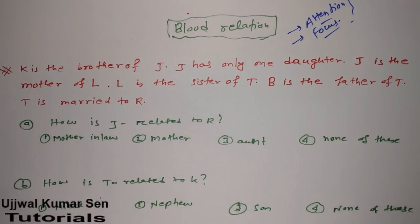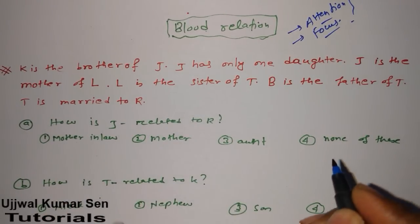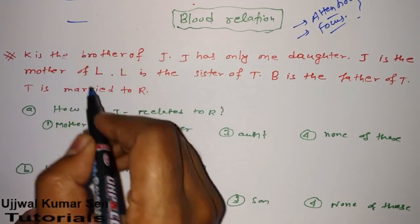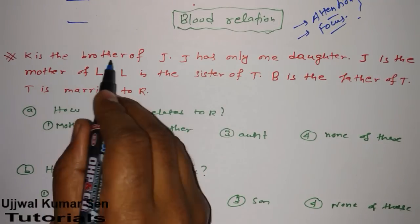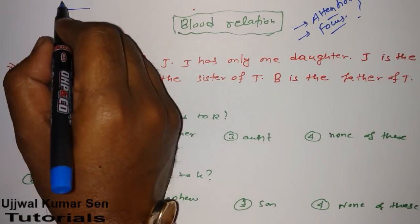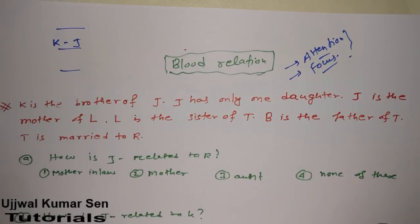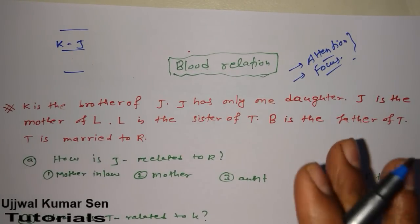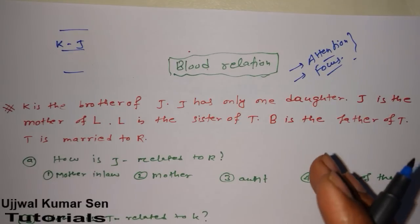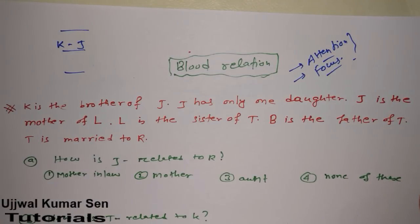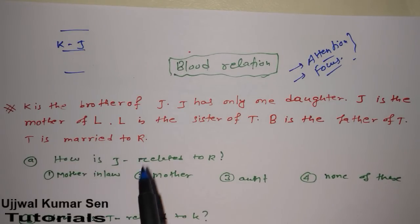Now in this question, K is brother of G. What I am going to do is make a layer. Suppose they are saying K is the brother of G, so K and J are of the same generation — both are in the same generation, same relation. J has only one daughter, and J is the mother of L.